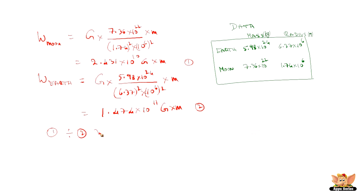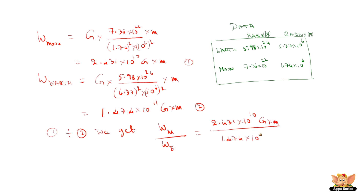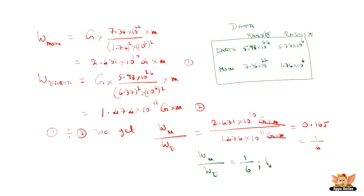Dividing W_m by W_e: (2.431 × 10¹⁰ × G × m) / (1.474 × 10¹¹ × G × m). Since G and m are constants they cancel, giving 0.165, which is approximately 1/6. That means the weight of an object on the Moon divided by the weight of the same object on Earth equals 1/6 — the weight on the Moon is one-sixth the weight on Earth.